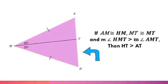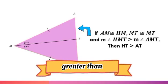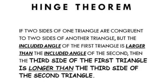Then HT is greater than AT. That is what you call the hinge theorem. If two sides of one triangle are congruent to two sides of another triangle, but the included angle of the first triangle is larger than the included angle of the second, then the third side of the first triangle is longer than the third side of the second triangle.